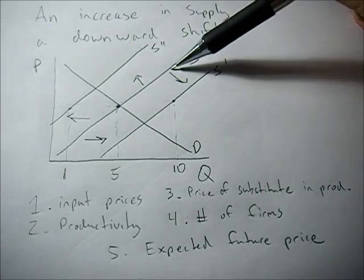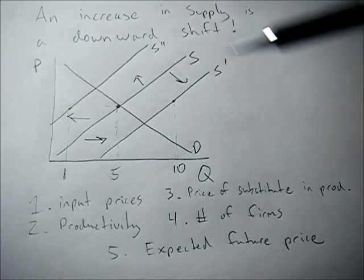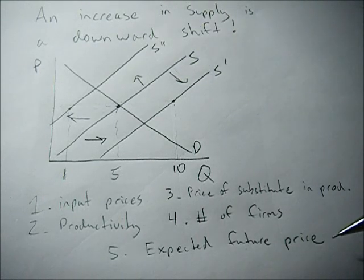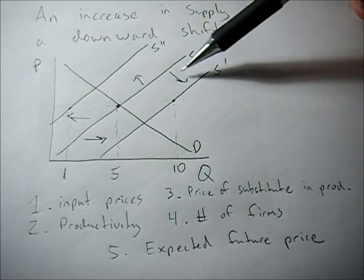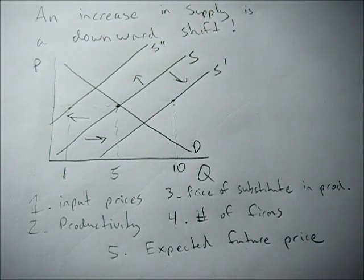The number of firms could increase, which would increase supply. And the expected future price could drop, which would also increase supply, because they'd want to sell those goods now at the higher price.